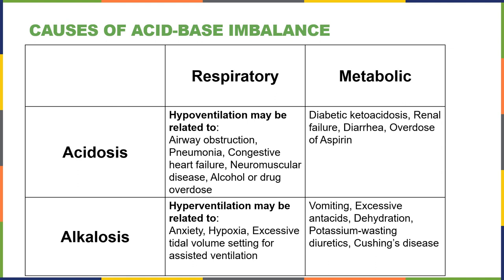Metabolic acidosis could result from diabetic ketoacidosis, when insulin signaling is impaired and ketogenesis results from excessive fat oxidation, leading to the accumulation of keto acids like beta-hydroxybutyric acid. Renal failure — kidney disease — can also cause metabolic acidosis by disrupting the ability of the kidneys to excrete hydrogen ions. Diarrhea is another example, as it leads to an excessive rate of bicarbonate excretion with feces. An overdose of aspirin can also cause metabolic acidosis, as aspirin contains acid that is absorbed and can disrupt the acid-base balance of the body.